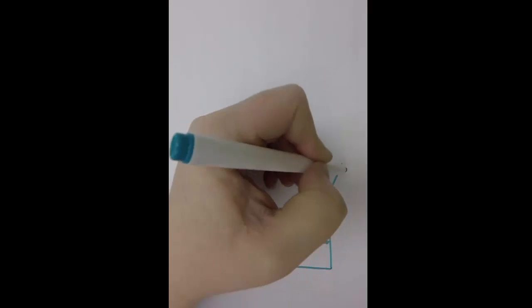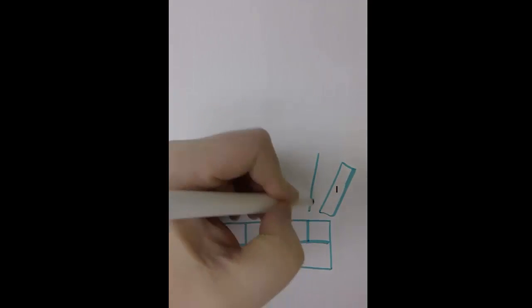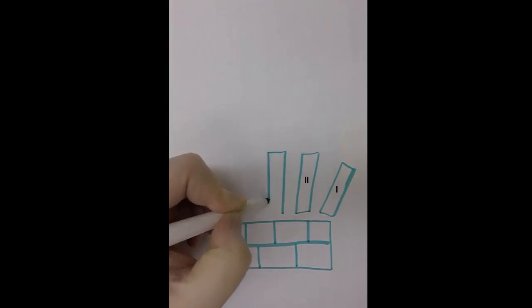I'll go ahead now and draw the metacarpals. Metacarpals are numbered using Roman numerals, starting from the thumb side, one through five.